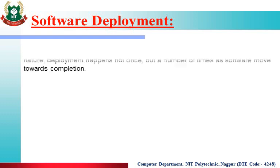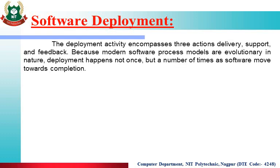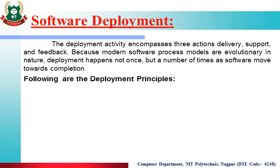The last phase is Software Deployment. The deployment activity encompasses three actions: Delivery, Support, and Feedback. In deployment we hand over the software to the customer. Because modern software process models are evolutionary in nature, deployment happens not once but a number of times as the software moves towards completion.